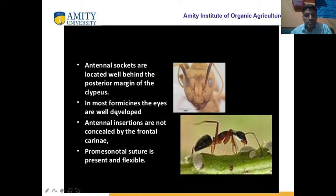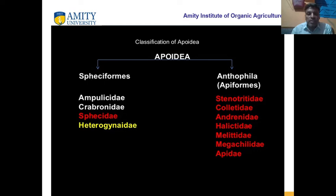In Formicidae, the eyes are well developed. Antennal insertions are not concealed by the frontal carinae. The promesonotal suture is present and flexible — they can move their body. Apoidea is classified into two groups: Anthophila and Spheciformes. In Spheciformes, we study four important families: Ampulicidae, Crabronidae, Sphecidae, and Heterogenidae. There are many families in this group.